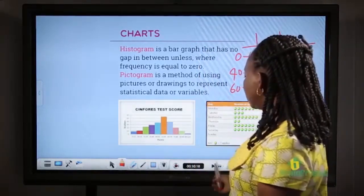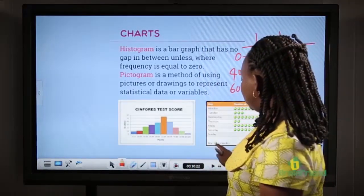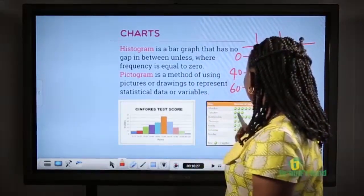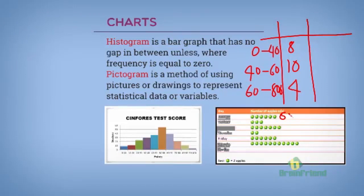And we also have a key. Our key says 1 apple here represent 2 apples. Now, what it means is that on Monday, if you count the number of apples, we have 6 apples. On Monday, 12 apples were produced. This is simply 6 that we see here times 2.